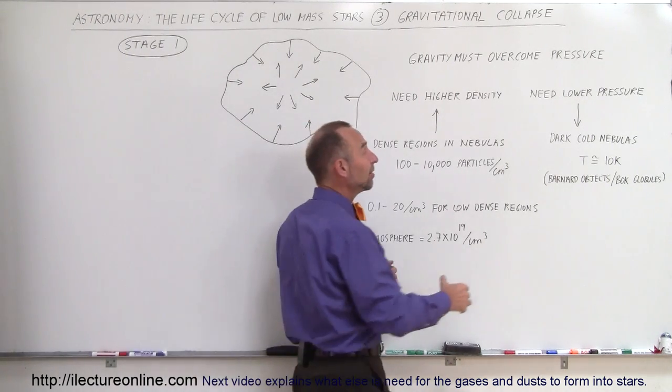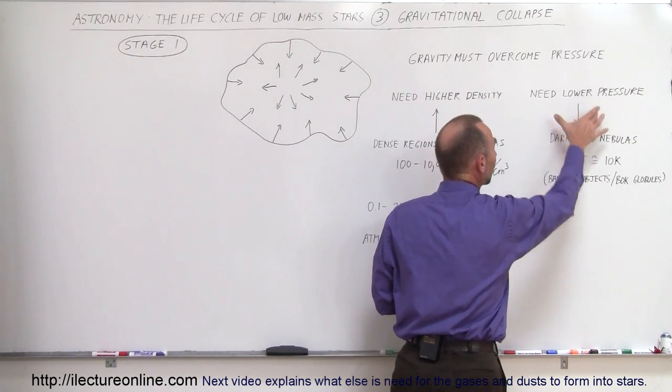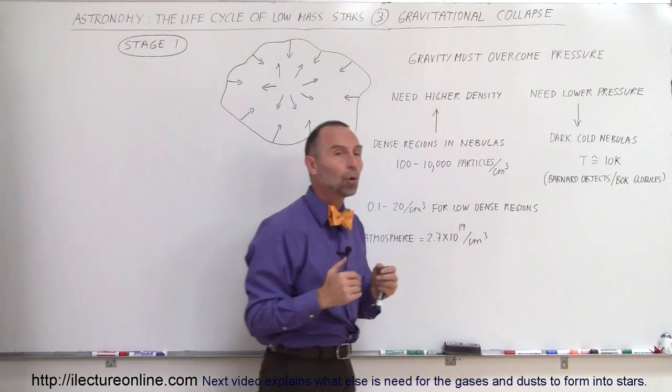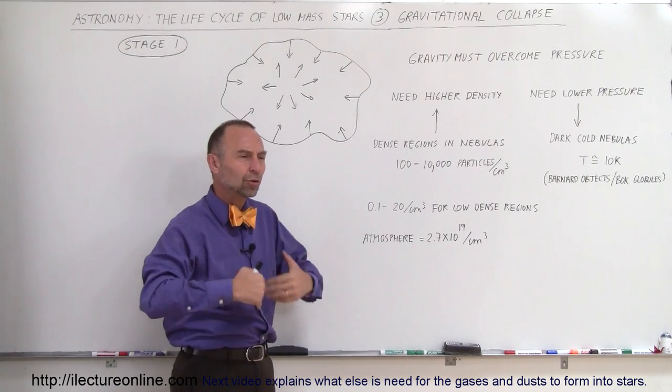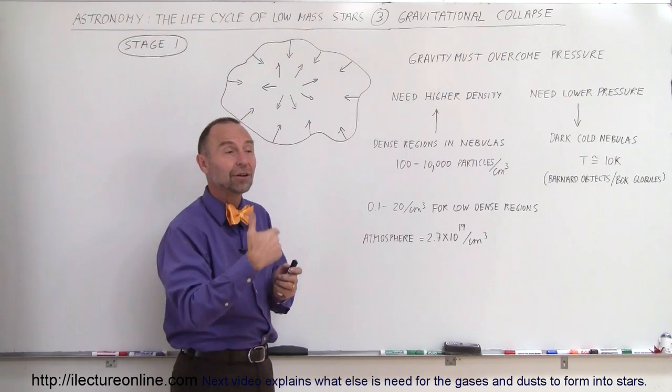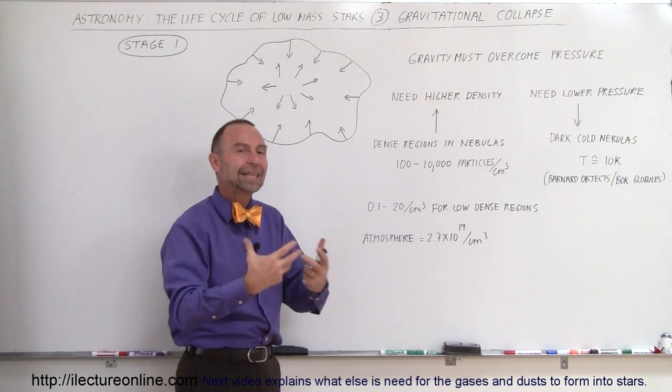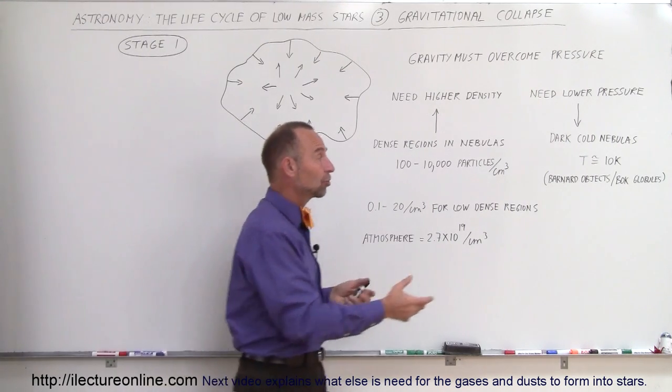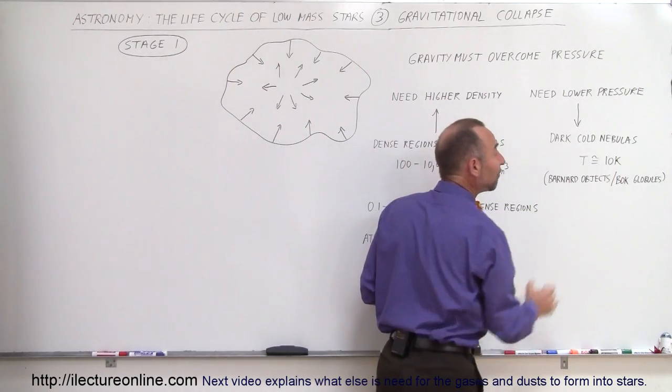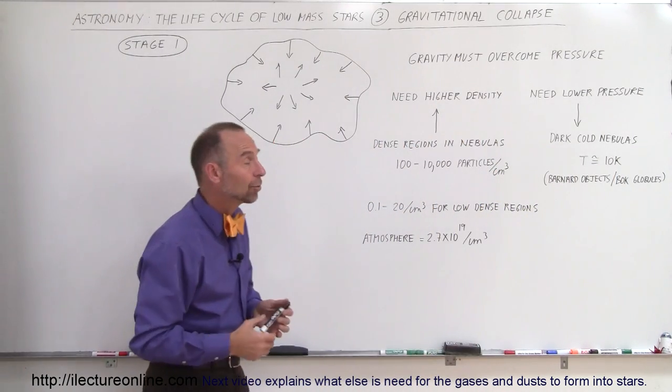Another necessary ingredient is that in order to have lower pressure, the temperature needs to be very cold. And in some regions of space where we have dark nebulas, nebulas that do not shine because they're not anywhere near very bright stars receiving radiation to heat up those nebulas, temperatures can be as low as just a few degrees above absolute zero, like 5 or 10 degrees Kelvin.